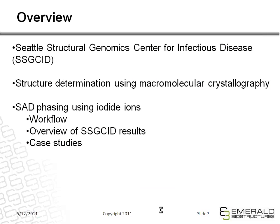For the overview, I will first give a one-slide background on the Seattle Structural Genomics Center for Infectious Disease, SSGCID, to give you a framework for the work I'll be presenting. Then I'll give a brief overview of structure determination using crystallography, to put what we're doing in context for people newer to crystallography. Then I'll head into the bulk of the talk: SAD phasing using iodide ions, covering a workflow, SSGCID results, and three different case studies.